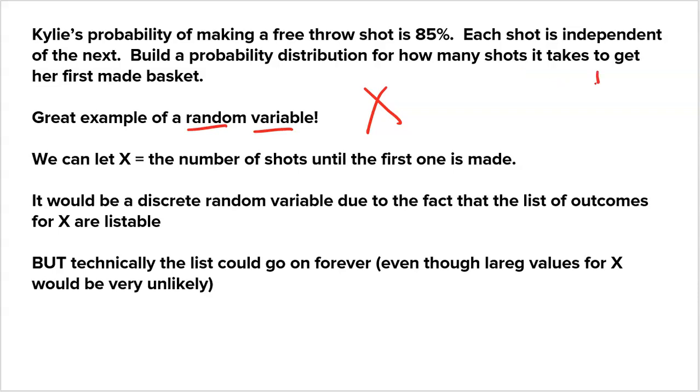It could take her one shot. Can't be zero, because you can't get your first shot if you don't take any attempts. Or it could be her second shot, third shot, fourth shot, or fifth shot when she makes her first free throw. This would be a discrete random variable due to the fact that the list of outcomes are listable. They're all whole numbers. It makes sense this is a discrete random variable.